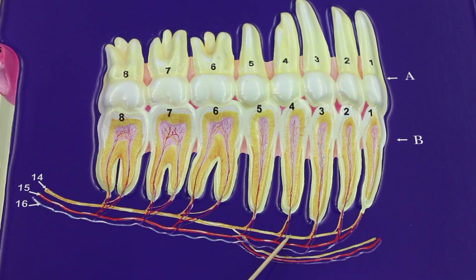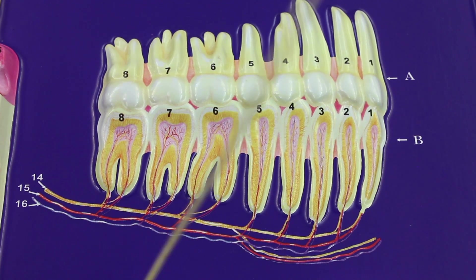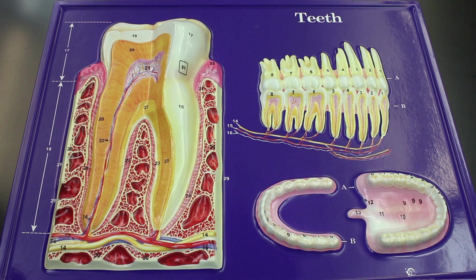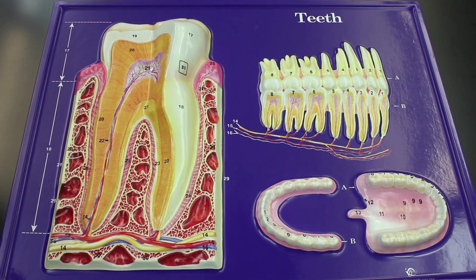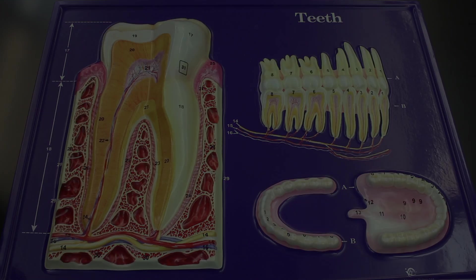Number 15 is the inferior alveolar artery and number 16 is the inferior alveolar vein. That covers everything you need to know about the teeth. If this helped, please hit the like button, comment below, and subscribe.